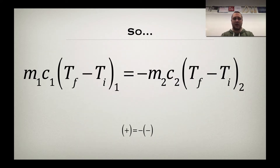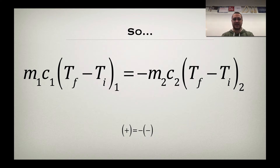If we break this down — breaking Q equals negative Q into its individual components — we get MC delta T equals negative MC delta T. So the material that has gained energy and the material that has lost energy, we can differentiate based on that negative sign.